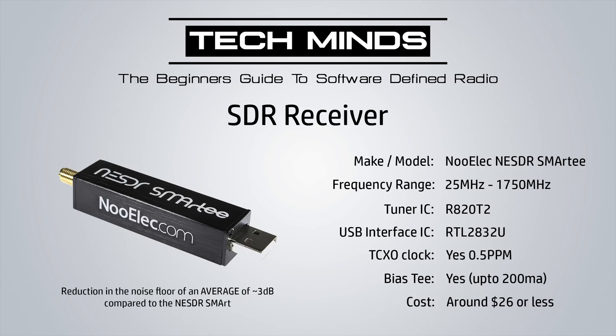One extra feature here is a bias-T of up to 200 milliamps. The bias-T allows a voltage on the antenna connection to power things like LNAs and other low-current devices connected between your SDR receiver and your antenna. This one is around $26 or less.